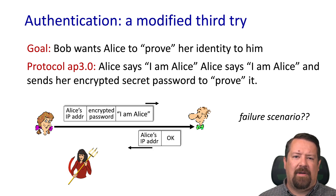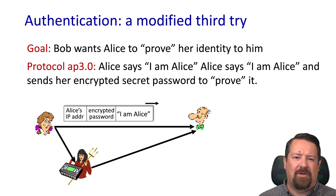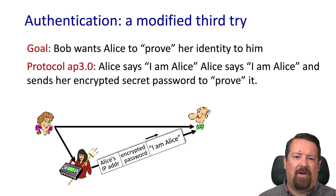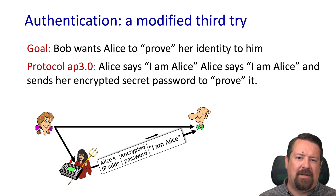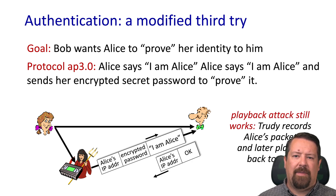We modify that a little: the password is now encrypted, say with Bob's public key, which is a secure protocol. But the replay attack still works. Assuming Bob's public key hasn't changed, all the attacker needs is a copy of the encrypted password. They don't actually have to know the plaintext password — they can just replay the ciphertext. So still no good; the replay attack still works.